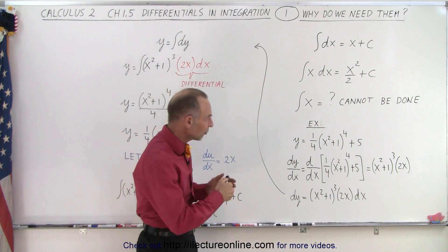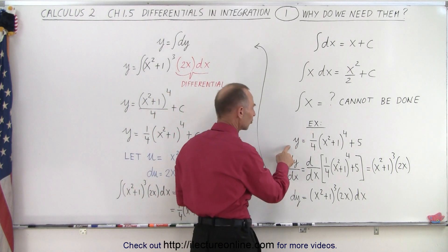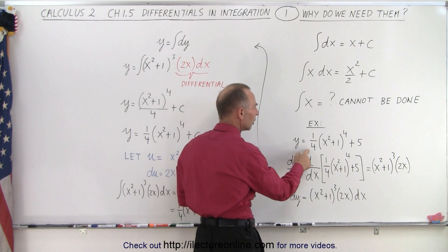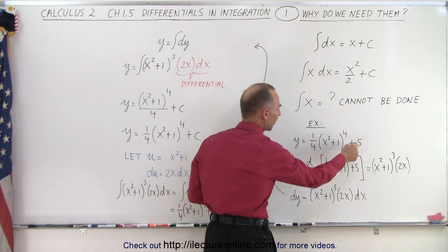So why? Well, let's do an example. Let's say we have the function where y is equal to one quarter times the quantity x squared plus one to the fourth power plus five.